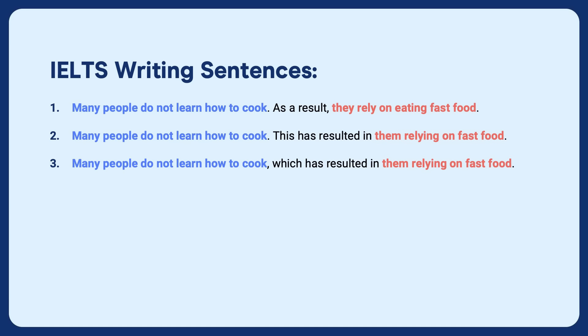Here I've removed the full stop and 'this' and replaced it with a comma and 'which.' Watch out for the full stop + 'this' versus comma + 'which.' If you're aiming for a 6.5 or seven, these three forms are going to help you and show some range.